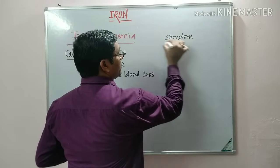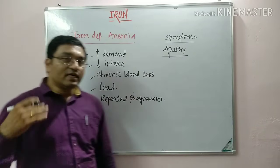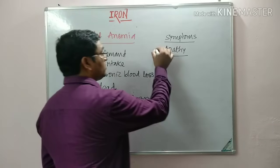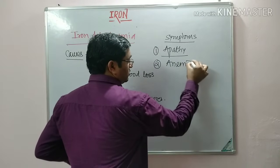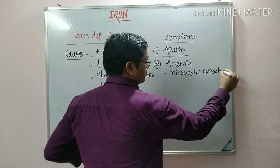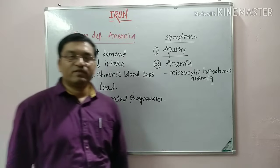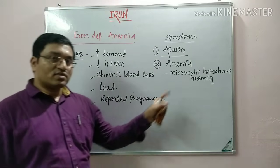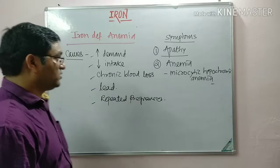Symptoms include two important findings. The first is apathy — meaning a sluggish and dull child — with decreased school performance, fatigue, and weakness. The second is anemia, which is microcytic hypochromic anemia. There is also atrophy of the mucosal and gastric mucosa known as achlorhydria, also called Plummer-Vinson syndrome. These are the important manifestations of iron deficiency.